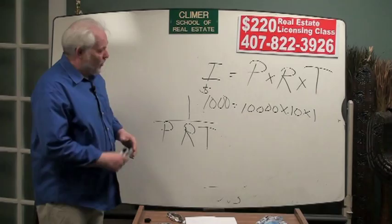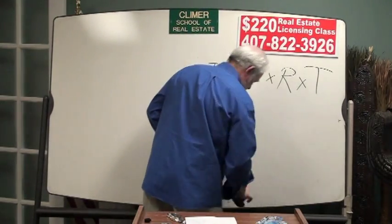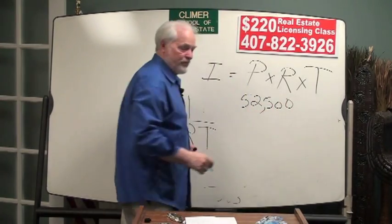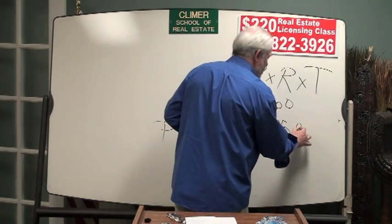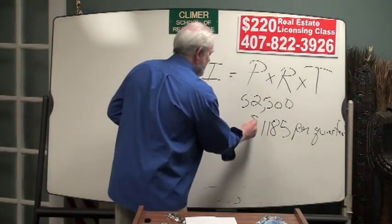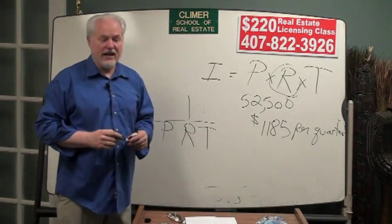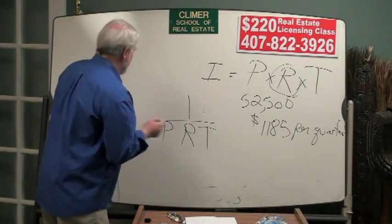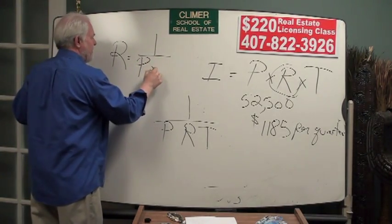Now, if you wanted to know one of these other factors, for instance, if the state exam test question said, you borrowed $52,500, that's the principal balance, you paid $1,185 per quarter for the interest, and the question is, what is the interest rate? Well, here's the formula. You cover up the R. R equals I over P times T.